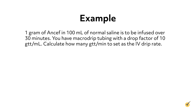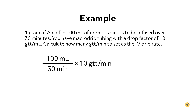Let's look at an example of an IV piggyback medication. 1 gram of Ancef in 100 milliliters of normal saline is to be infused over 30 minutes. You have macrodrip tubing with a drop factor of 10 drops per milliliter. Calculate how many drops per minute to set as the IV drip rate. Using the formula: 100 milliliters divided by 30 minutes, multiplied by 10 drops per milliliter, equals 33.3, rounded to 33 drops per minute.